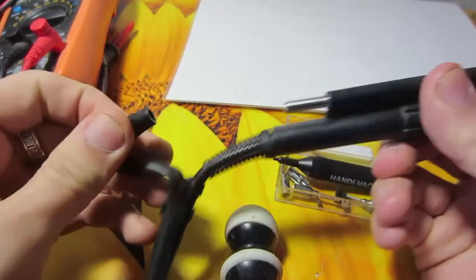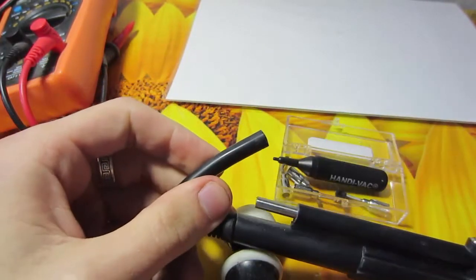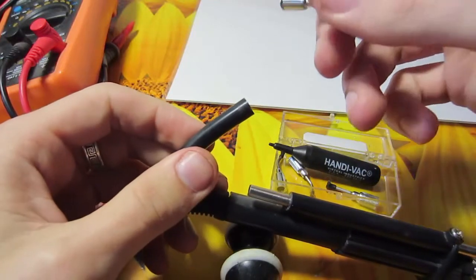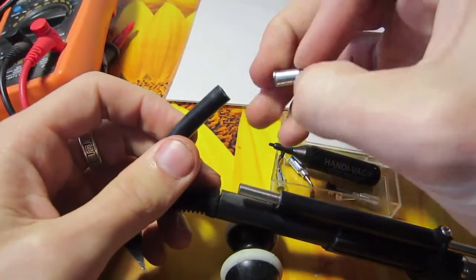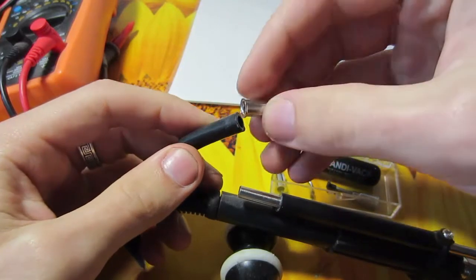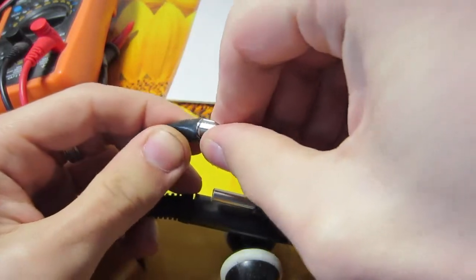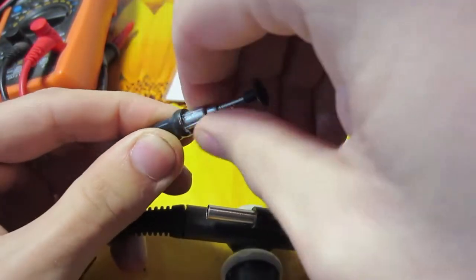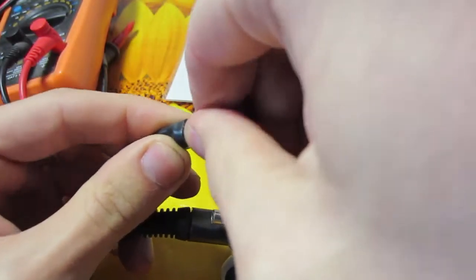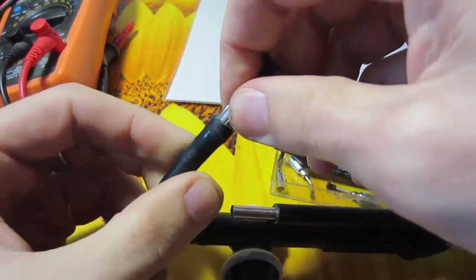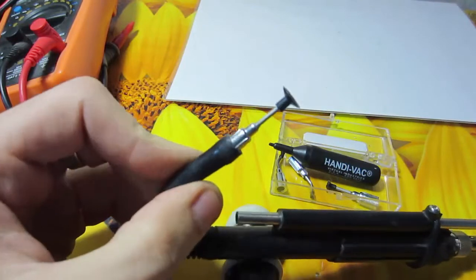And then we will put in the tip of this vacuum pen so there should be no gaps to create maximum vacuum. This is what we got.